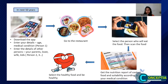Now you are at the restaurant and the foods are on the table. Open the app, then select the right person who is going to eat this food. After selecting the right person, you can scan the food. You will then receive the nutrition report of the cooked meal and the suitability message according to your medical condition and age.